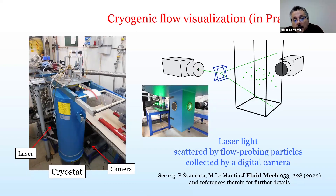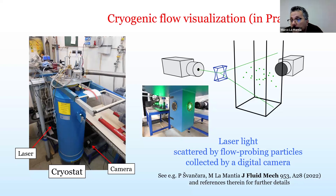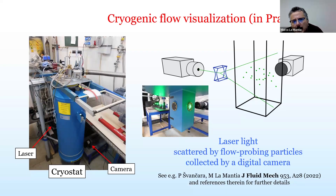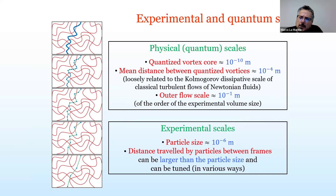The apparatus we have here in Prague consists of a cryostat to keep the liquid helium, a laser, and a camera. The principle is: you have particles in the fluid, you illuminate them, and you track the scattered light using the camera. An important issue to keep in mind is the difference between the physical scales of the system and the scales that can be probed experimentally using the experimental tools.